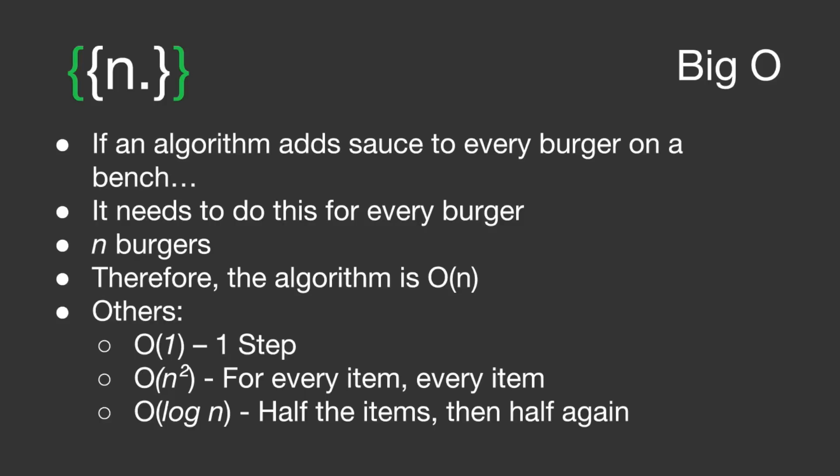For example, if we have an algorithm to add sauce to every burger on a bench, we need to do this for every burger, and there are n burgers. Therefore, we say the algorithm is order n, or O(n), or Big O.